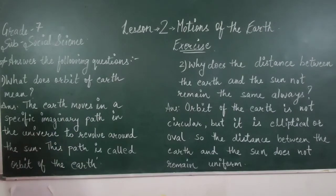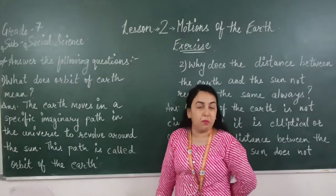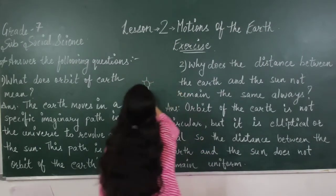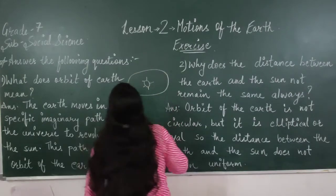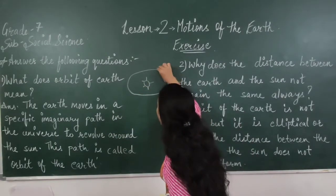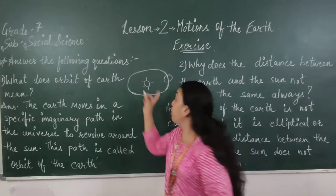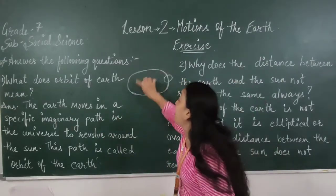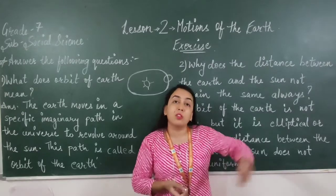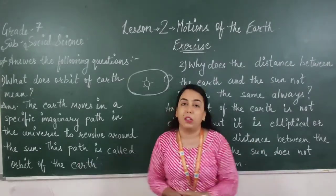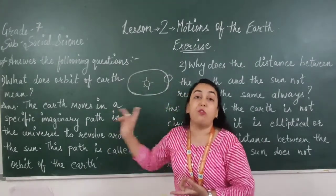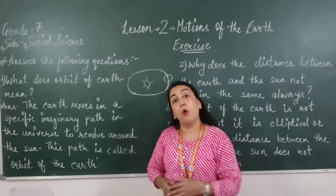The earth moves in a specific imaginary path in the universe to revolve around the sun. This path on which the earth moves through space and revolves around the sun is called the orbit of the earth. This is a very easy question but I thought some students might find it difficult to understand, that's why I am explaining. So the path where the earth is moving around the sun, revolving around it, is called the orbit of the earth. I hope you understand this question.